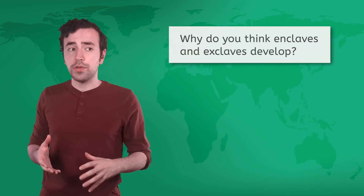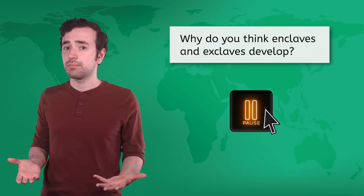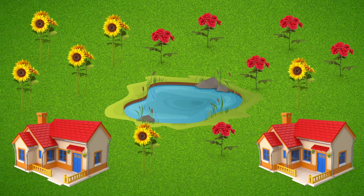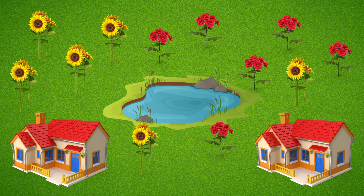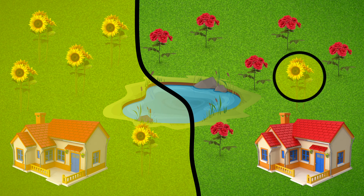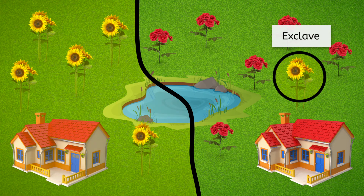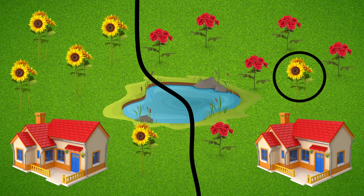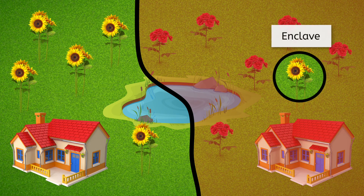Think back to how borders evolve — why do you think enclaves and exclaves develop? Let's go back to my backyard. What if I agreed to draw a border around this group of sunflowers and give my neighbor control of it? His property would be fragmented and he'd own this exclave of sunflowers. My property would therefore be perforated, because this would be considered an enclave in my backyard.